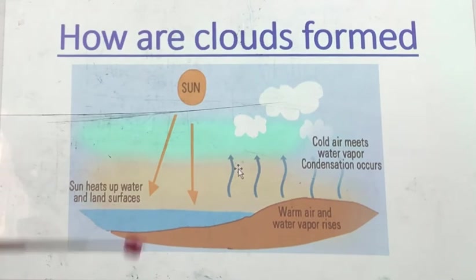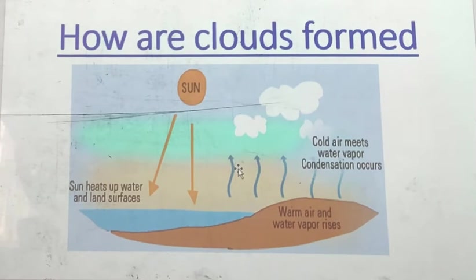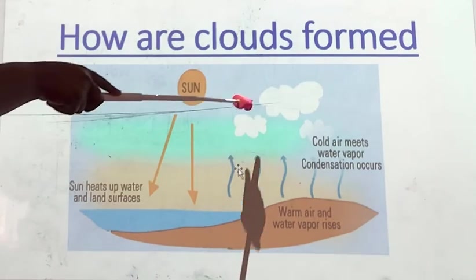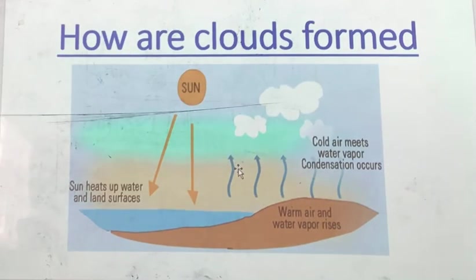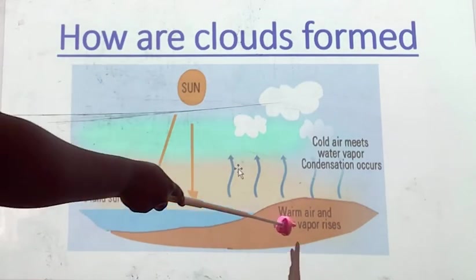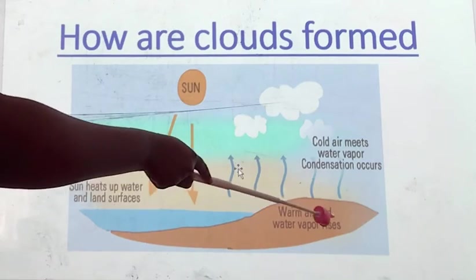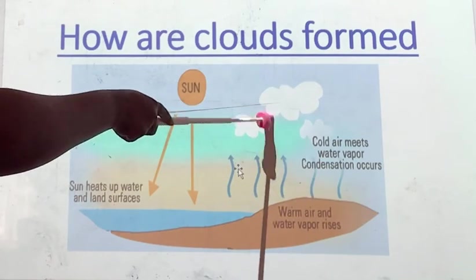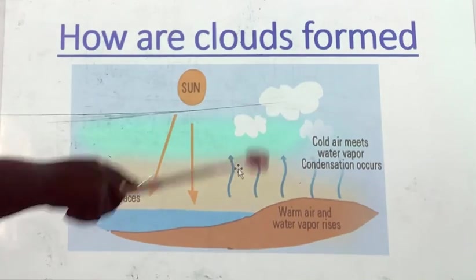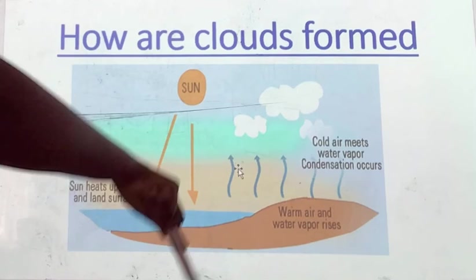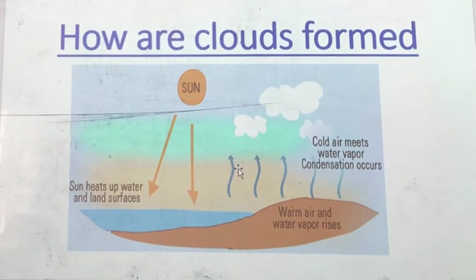Can you see the water? It vaporizes. Water vapors go up and then form the cloud. When the water vaporizes, it goes up, forms the cloud, and after that, rain comes.